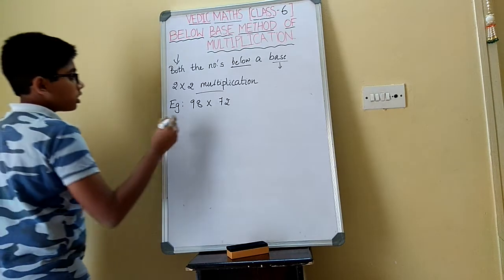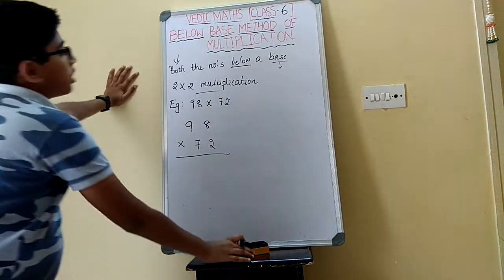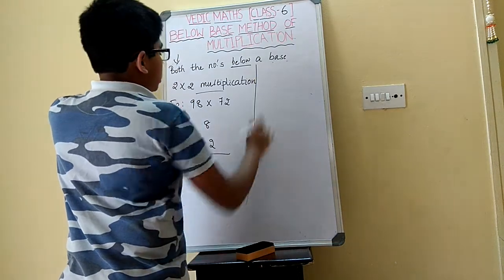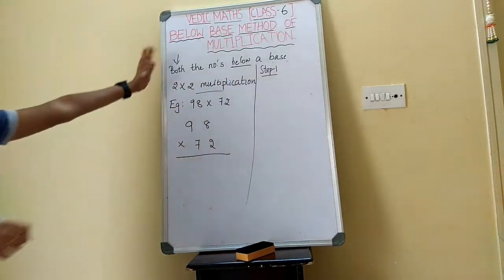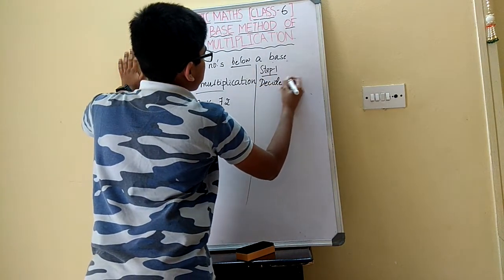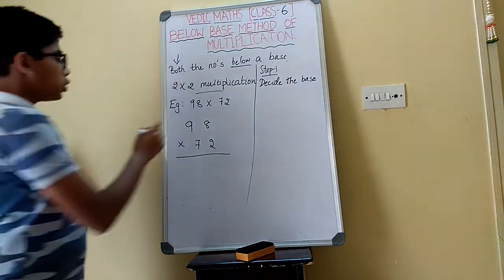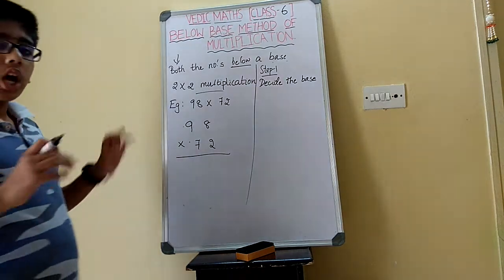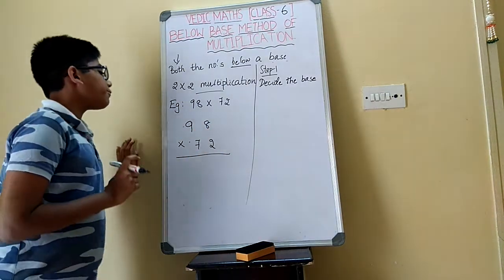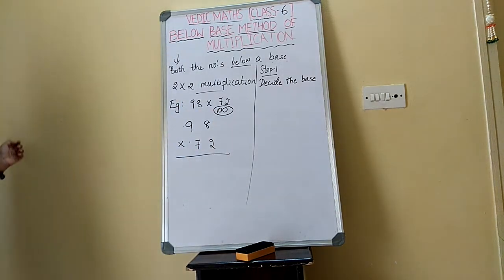Write it vertically and leave some gaps between. Now we will go through the steps — the same steps apply for below-base with a few differences. Step 1: decide the base. That base should be the nearest base to both numbers. I find the nearest base to be 100. That will be our base.